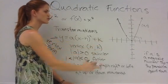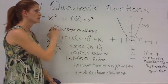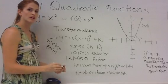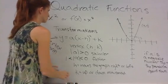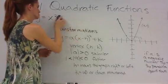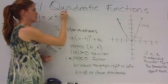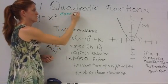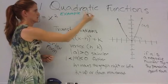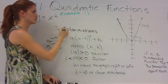If a is a negative number, the parabola opens down. So these are the different transformations that we are going to use. Let's do one example to see how our graph is going to change.